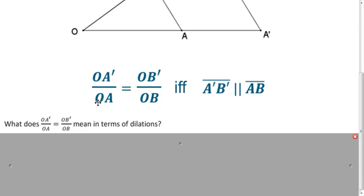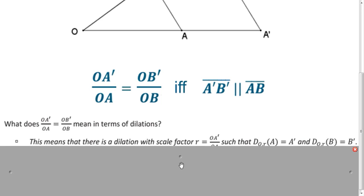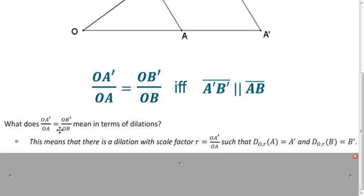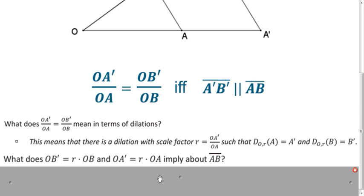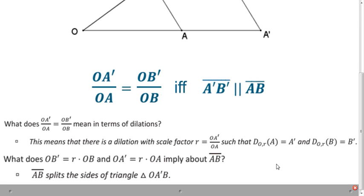So what is this proportion saying if we think about dilations? Well, this proportion is really talking about a scale factor. These would both be the scale factors, and our center would be that point O. So dilation will take A onto A prime and B onto B prime. And what do these statements imply about segment AB? That implies that it is a side splitter. If we divide OB prime by OB, we get R. And the same holds over here. We divide OA prime by OA, we get R. So those are both equal, so we have a side splitter.